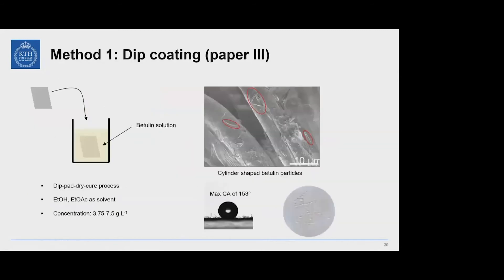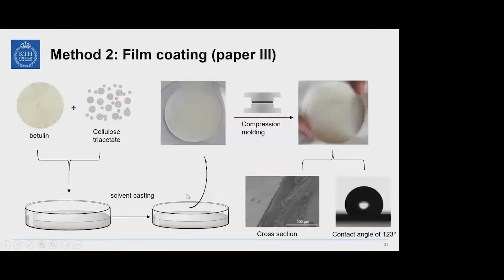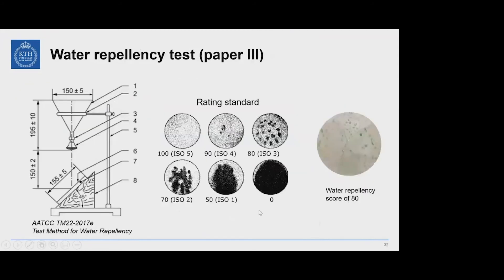The first method is the simplest: dip coating. We prepared betulin solutions with different solvents and concentrations, and used a dip-pad-dry-cure process to adhere cylinder-like betulin particles onto textile fibers. Such prepared textiles showed a very high contact angle of 153°. The second method is film coating: using cellulose triacetate as a film-forming agent, we prepared a betulin-based film and coated it onto the textile, which showed a water contact angle of 123° and a standard spray test score of 80.